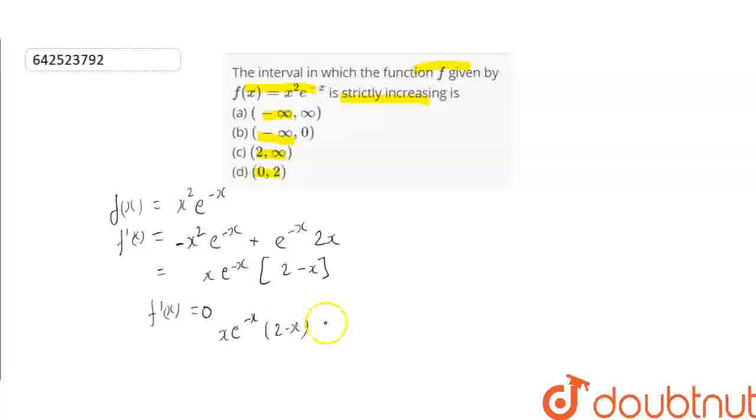e^(-x) cannot equal 0 because it is always positive for all x belonging to ℝ. e^(-x) is always positive.